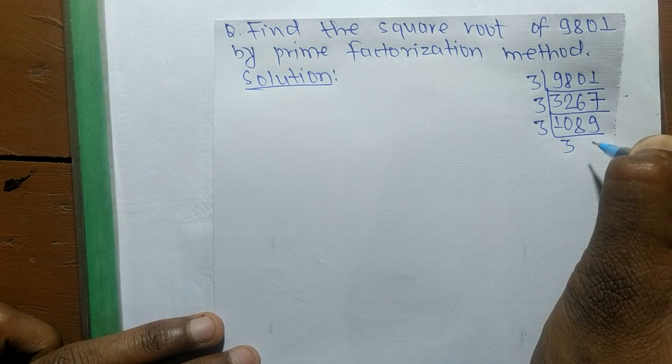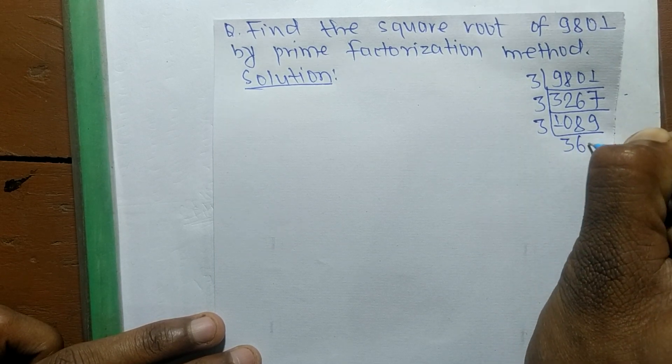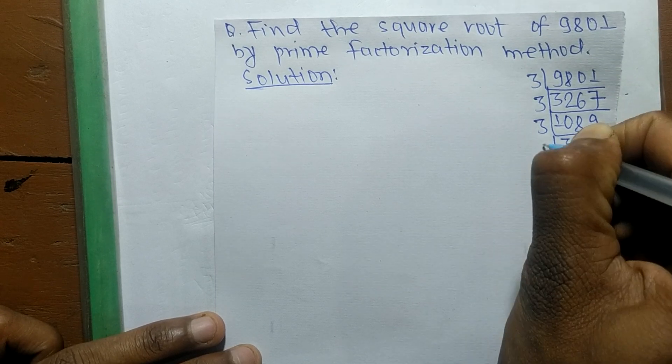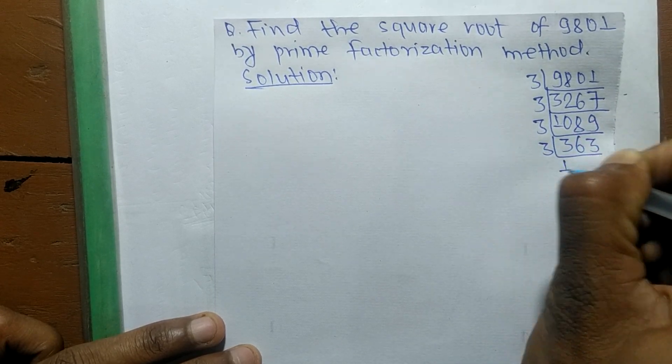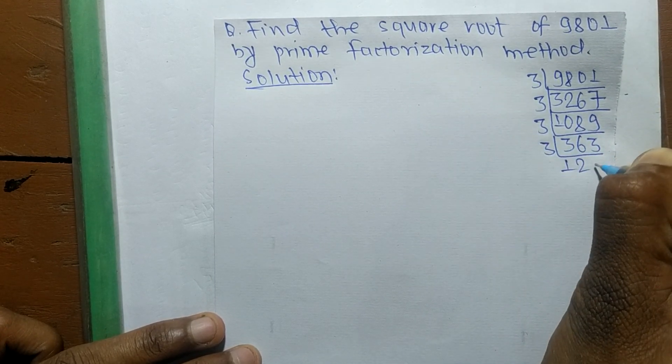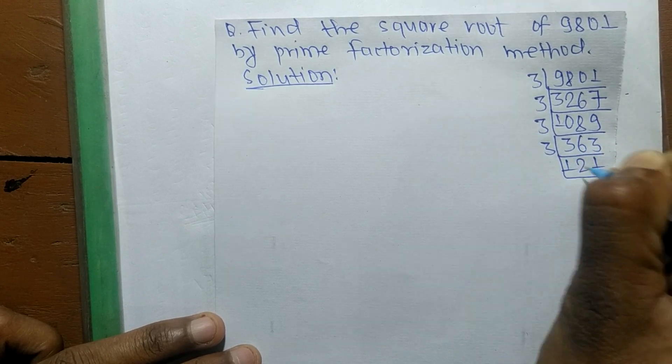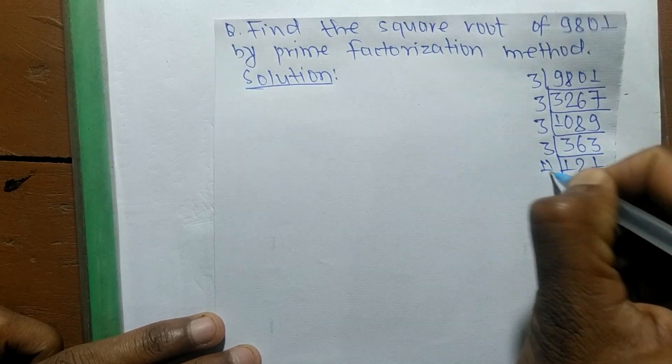3 times 1 is 3, 3 times 2 is 6, and 3 times 1 is 3. So now its prime factorization is complete, with factors including 11 times 11. After finding these prime factors, now we are finding the square root.